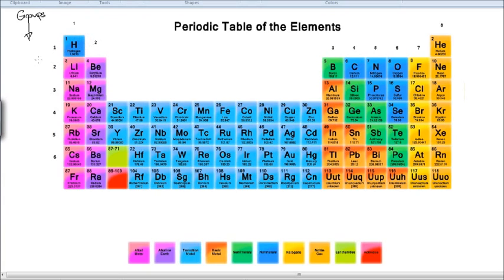The second thing is you will notice numbers 1 through 6 going across, and those numbers that go across are called the periods. For example, if I said to you what element is in group 5, period 3 — you'd find group 5, period 3, and that would be phosphorus. If I said group 2, period 4, that's calcium.